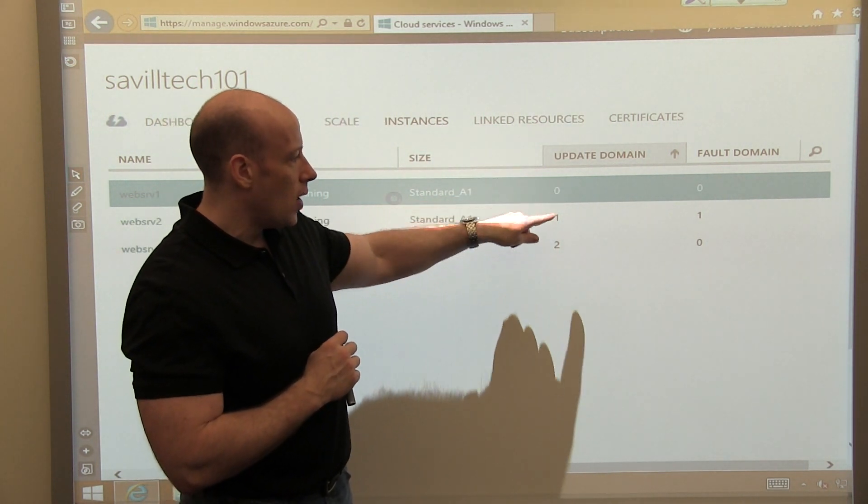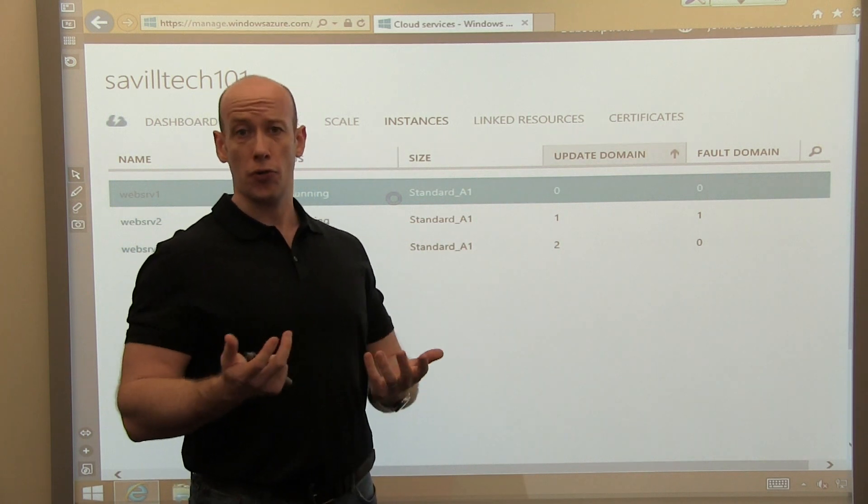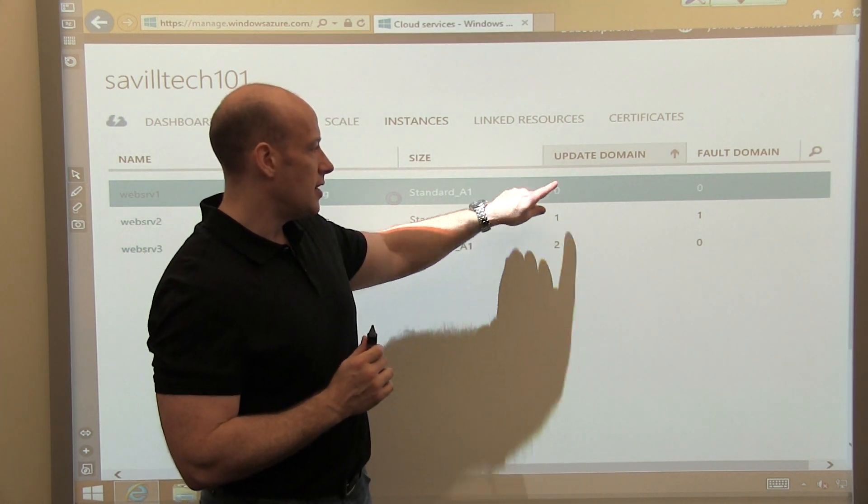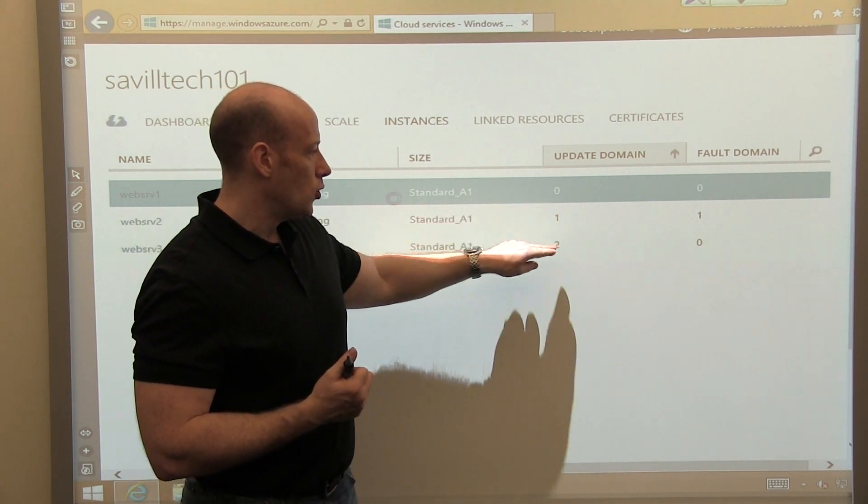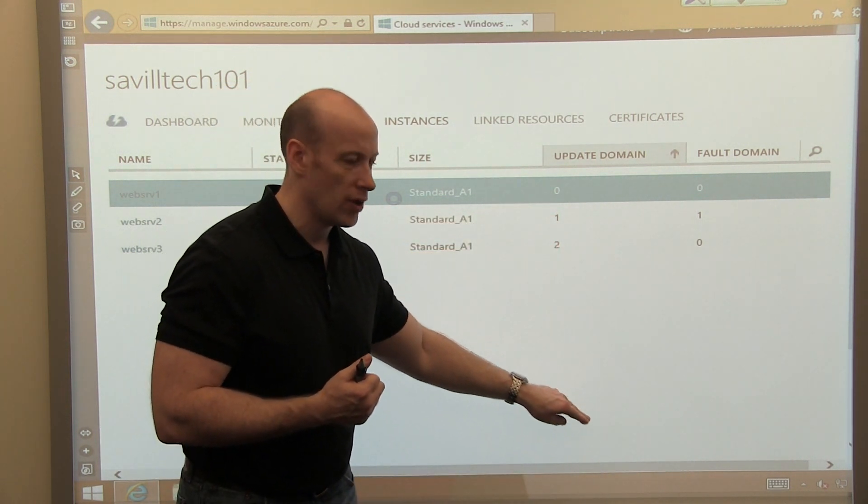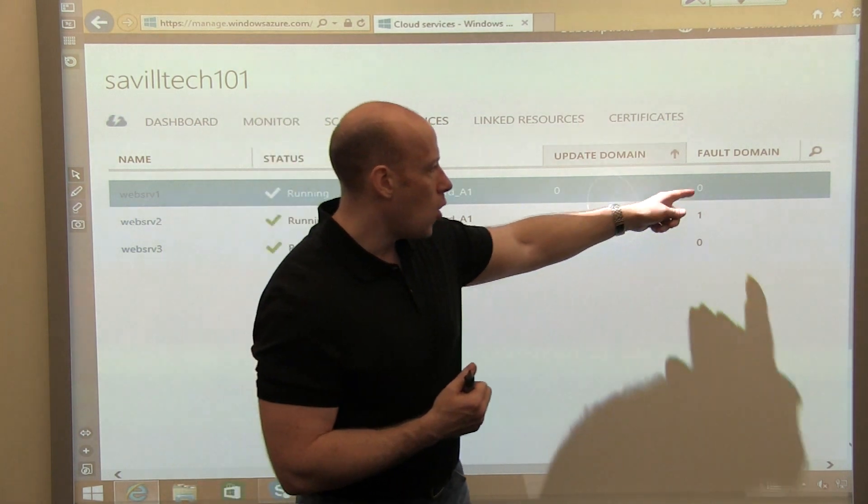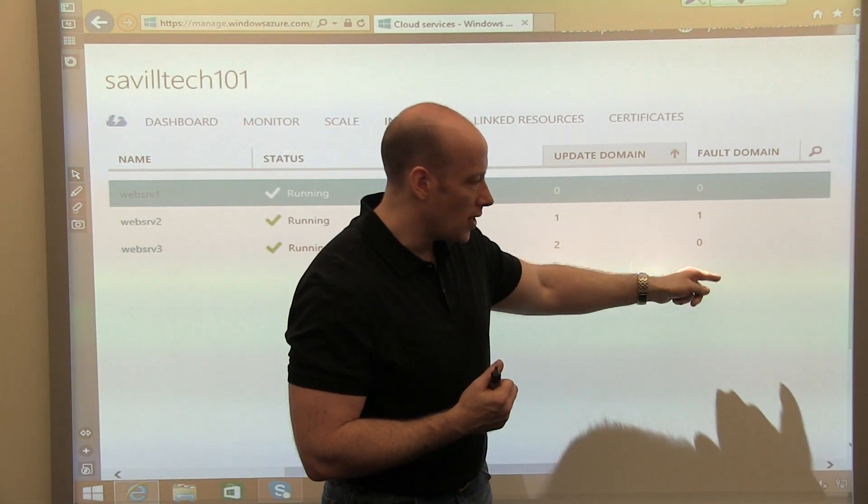And that's why you can see 0, 1, 2. I'm on three because I've only got three VMs. If I had five, I'd see 0, 1, 2, 3, 4. If I had 10, I'd see 0, 1, 2, 3, 4, 0, 1, 2, 3, 4. It would be round robin. But only two fault domains.